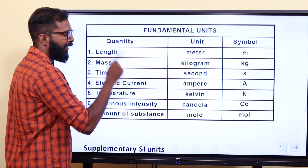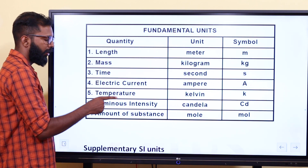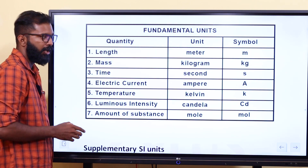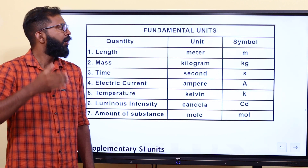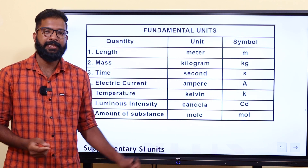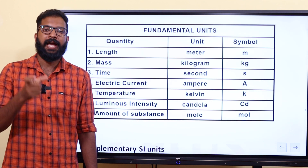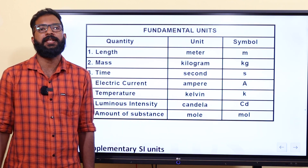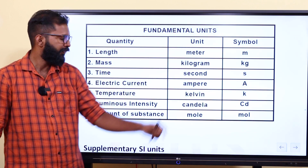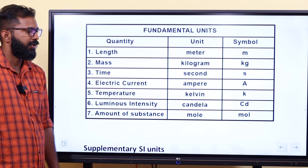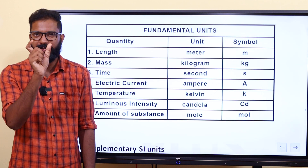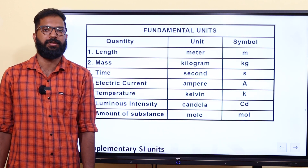Luminous intensity is measured in candela — it is a fundamental quantity and is represented by the capital symbol cd. Finally, amount of substance is measured in mole, written as MOL, and represented by the symbol mol.